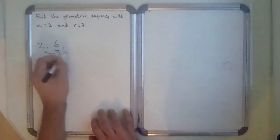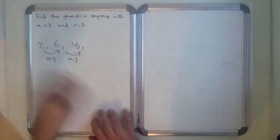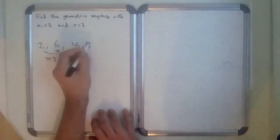So 2 times 3 is 6. I'm going to do it again, times 3. 6 times 3 is 18. I'm going to do it again, times 3. 18 times 3 is 54.